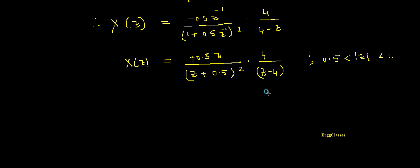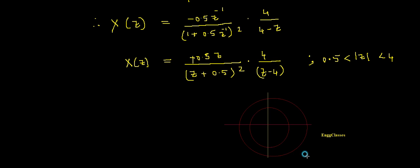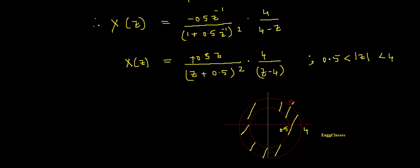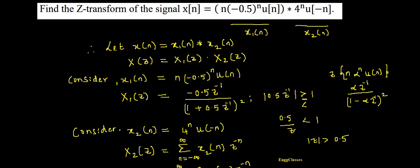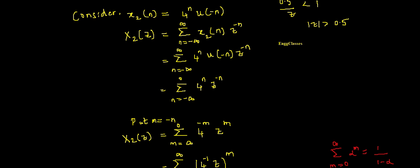To plot the ROC, draw two circles in the z-plane: one with radius 0.5 and one with radius 4. The region of convergence is the annular region between these two circles, i.e., 0.5 < |z| < 4. This completes the solution. If there are any doubts, please leave them in the comment section. Thank you for watching.